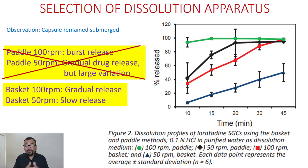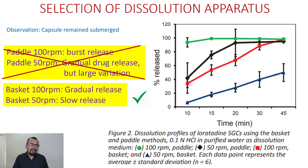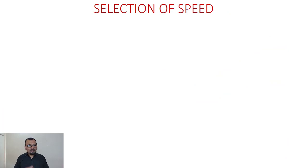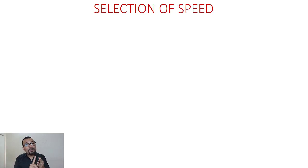Zeroing down on apparatus selection, the basket is the more suitable choice. So far we have selected: dissolution medium, dissolution volume, and rotating apparatus. The fourth important parameter is now the selection of apparatus speed.